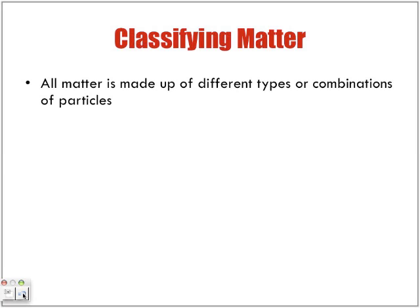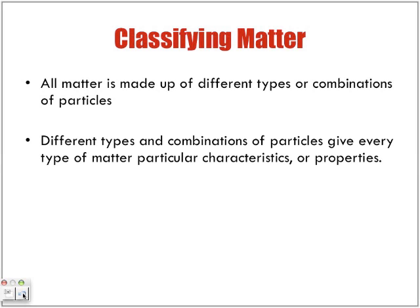Classifying matter. All matter is made up of different types or combinations of particles. Different types and combinations of particles give every type of matter a particular characteristic or a property. However that bit of matter is made up will be consistent within that piece of matter.